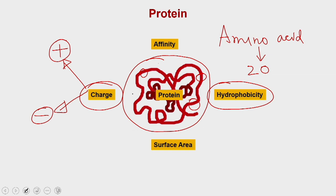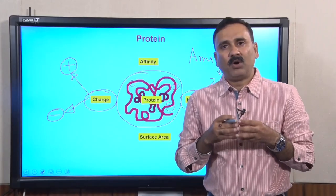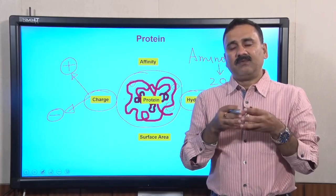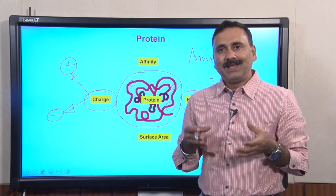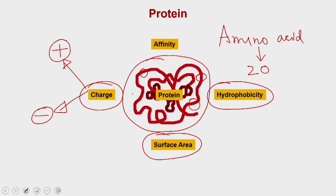Proteins acquire three-dimensional conformations, and based on the amino acid composition, the protein could have a smaller or larger surface area — the three-dimensional ball could be of smaller or larger diameter. Depending on the diameter, the surface area is also going to be different, and that is also a criterion exploited during chromatography.